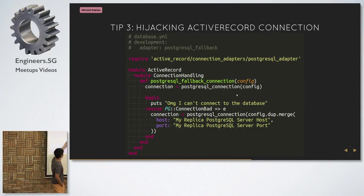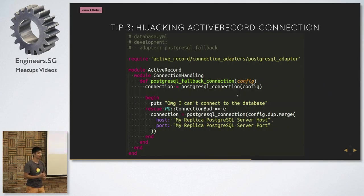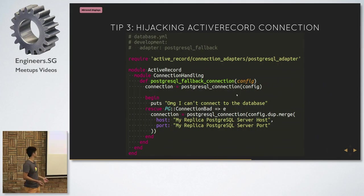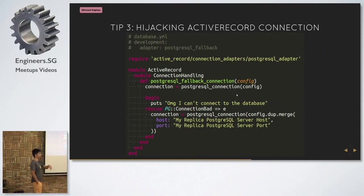So in the rescue block you can do a bunch of stuff. Q: So you still retain one master Postgres? A: Correct. Q: You seemed to put your host and port in the actual adapter code — do you put actual values there or do you grab them from the YAML? A: We actually put it in the YAML. So it would be something like `config[:replica_host]`, `config[:replica_port]` — we'd add those in ourselves.